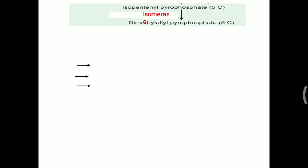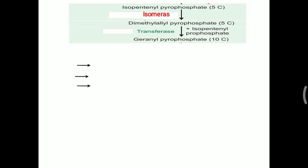In the next step, isopentenyl pyrophosphate (IPP) is converted into a structurally similar molecule called dimethylallyl pyrophosphate (DMAPP) by an isomerase enzyme. Both are five-carbon molecules — only a structural change occurs.